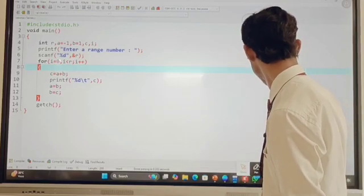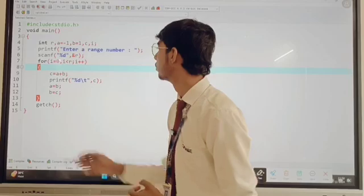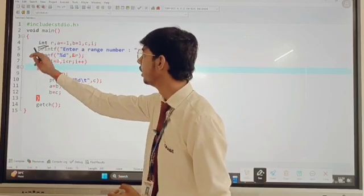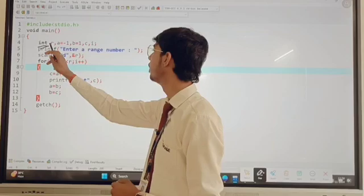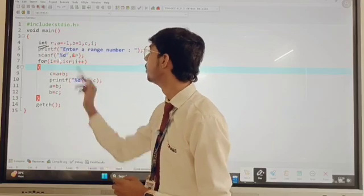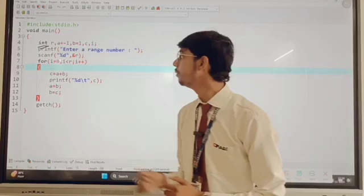Now, here we write a code. We use int data type for integer value and we declare a variable r, a is equal to minus 1, b is equal to 0, s0 1 and c and i.